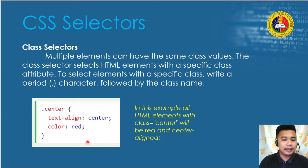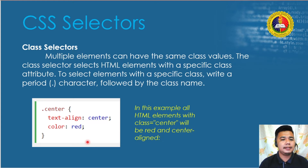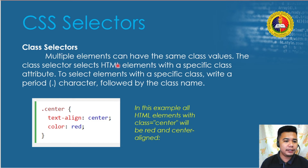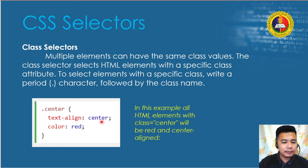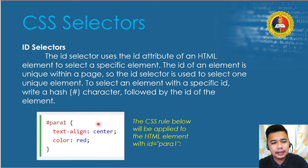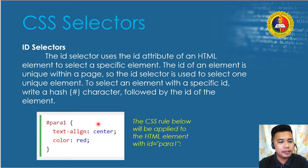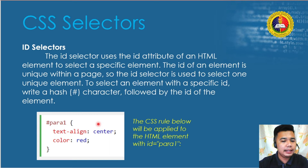Another type is the class selector. The class attribute can be used as a CSS selector, and multiple elements can share the same class value. To select elements with a specific class, write a period followed by the class name. All HTML elements with that class will share the same style. We also have ID selectors — the ID selector uses the ID attribute of an HTML element to select a specific element. Since each ID is unique within a page, the ID selector targets one unique element, written with a hash character followed by the ID name.